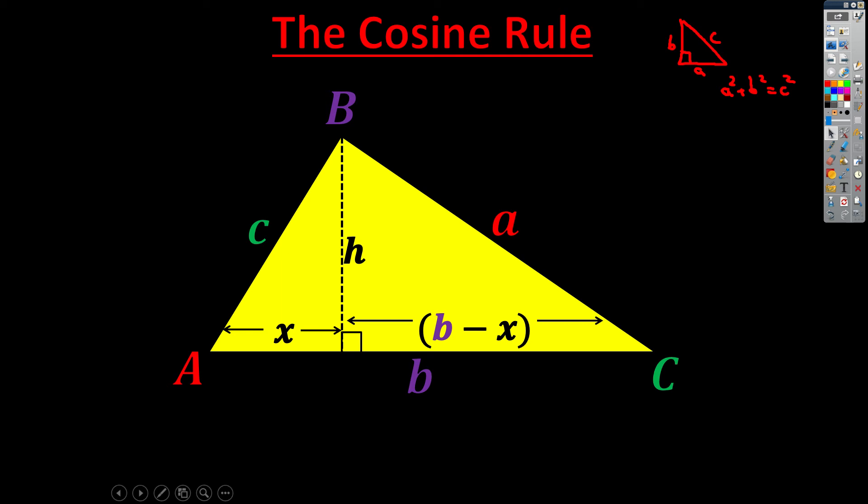That tells us now that we can write down two versions of Pythagoras, one on the left side of this triangle and one on the right side. So on the one hand, we've got C squared equals X squared plus H squared. That's the left hand triangle. And on the right side, we've got A squared equals B minus X all squared and then plus H squared again.